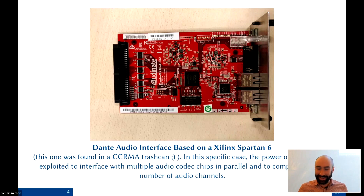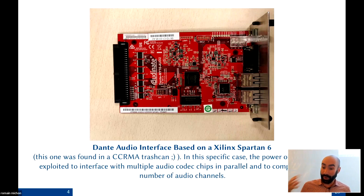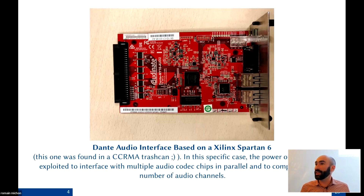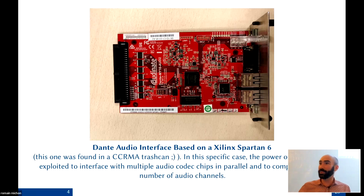The main use of FPGAs for Dante interfaces is processing a very large number of digital audio streams in parallel. Even passing through 500 audio streams on a small FPGA barely consumes any computing power. Of course, once you start doing one multiply on each stream you quickly hit a bottleneck.